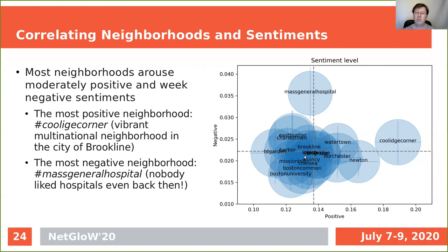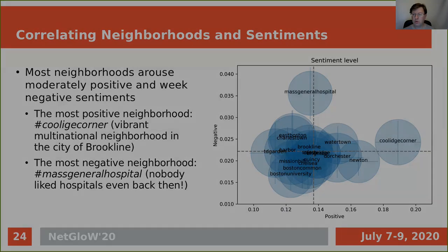Incidentally, if you remember the picture of Brookline shown at the beginning of the talk with streetcar tracks, that was taken in Coolidge Corner — apparently not incidentally. There is another outlier: Massachusetts General Hospital. The hospital arouses strong negative sentiments, which is not surprising at all. Nobody likes hospitals. Even before coronavirus, that was not a happy place to go, and during coronavirus times it must be an even worse place.